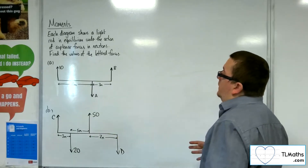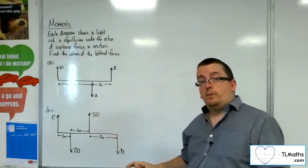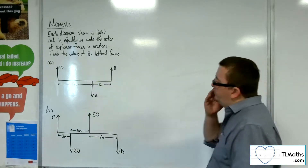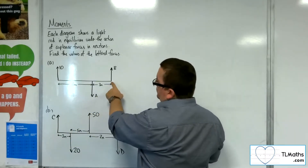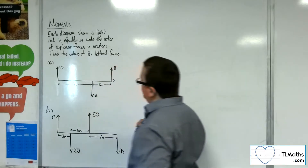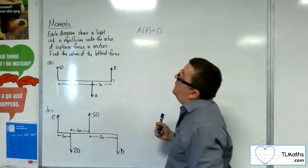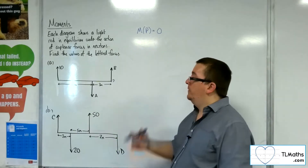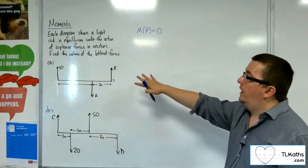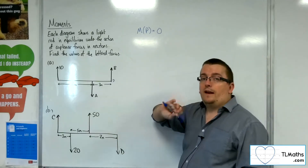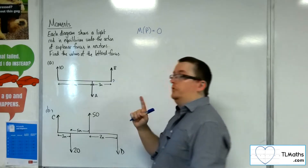What we're going to do is take moments about particular points, and that will enable us to work out those values. If I take moments about a point, let's call it P, then the moments need to sum to zero for the rod to be in equilibrium. Also note that these rods are light, so they have negligible mass — we don't have a weight acting through the centre of the rod.